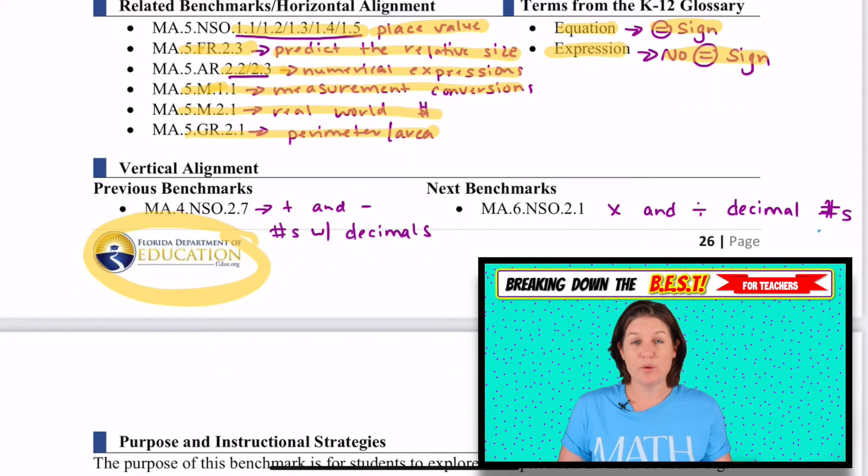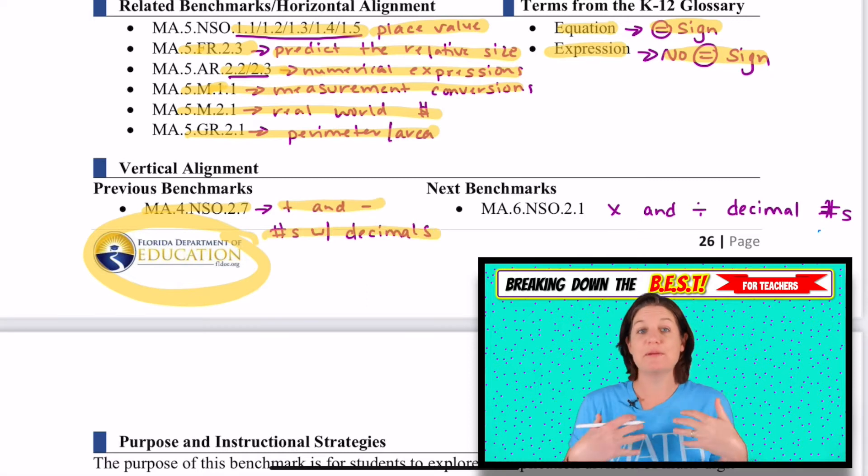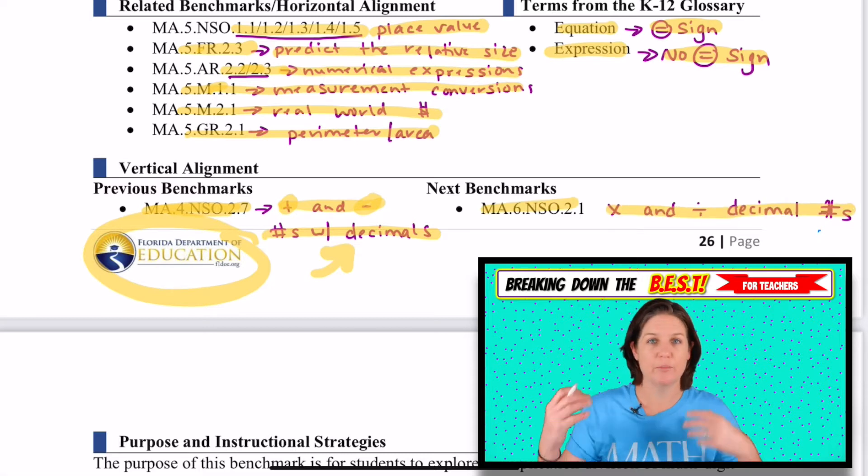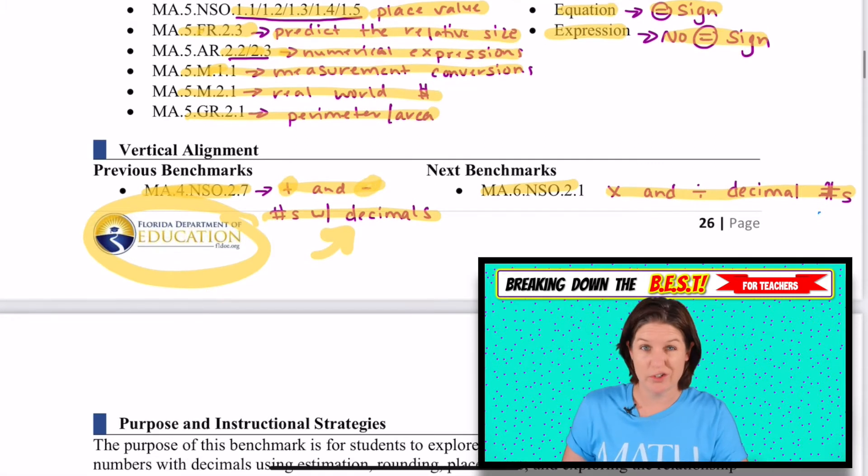I always like to see where they're supposed to be coming from. In fourth grade, they should have added and subtracted numbers with decimals. But just remember, as of me creating this video, this is the first year of the implementation with the best standards, so we might be a little shaky here. If you have access to the fourth grade videos, I would check out the standard to help you. And then in sixth grade, we will be multiplying and dividing decimal numbers using standard algorithm with a little bit more fluency.